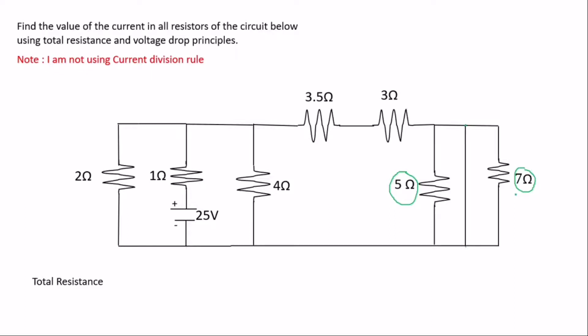To find the current in each resistor, we first need to find the total resistance by applying the parallel and series rules. When you check the breakdown of the circuit, you can see that some resistors are in series because they have the same current passing through them. They'll be in parallel with the 4-ohm resistor, and that combination will be in parallel with the 2-ohm resistor, which is in series with the 1-ohm resistor.